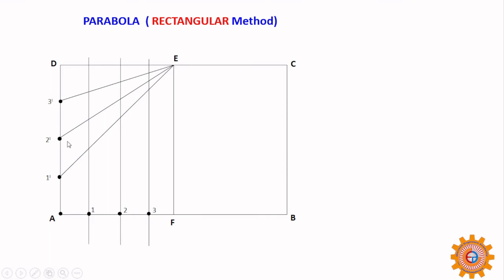Draw from F to E, 1 dash, E 2 dash, E 3 dash. The intersecting points will give our points - 1, 1, 2, 2, 3, 3. Like that you can also have the other part.